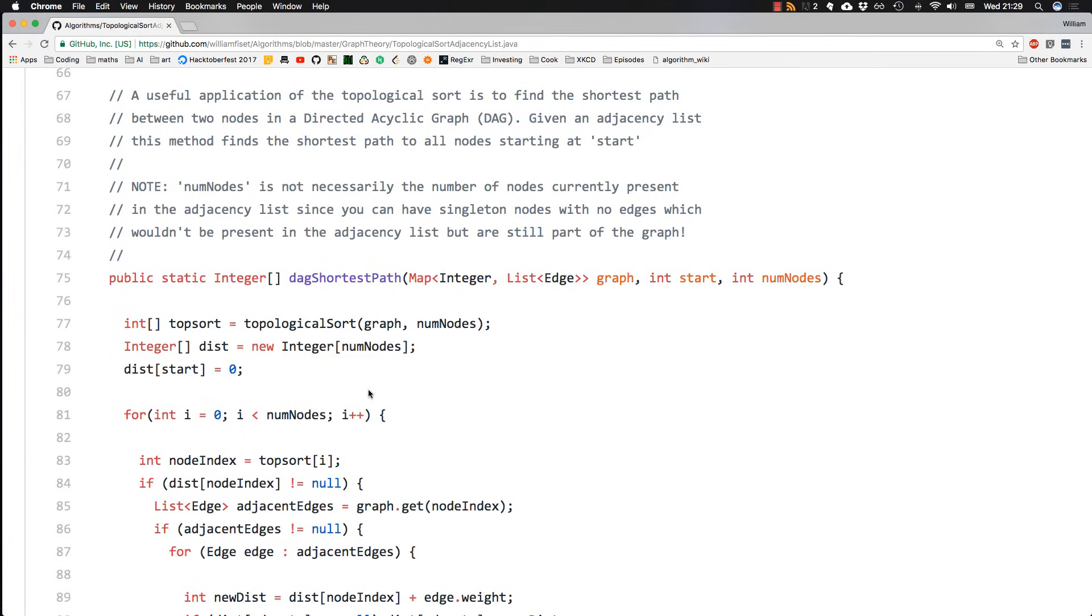Here I am on GitHub and we're looking at some code for the shortest path on a directed acyclic graph. Here's our method, directed acyclic graph shortest path, and it returns the distance to each node stored in an integer array for some starting node.